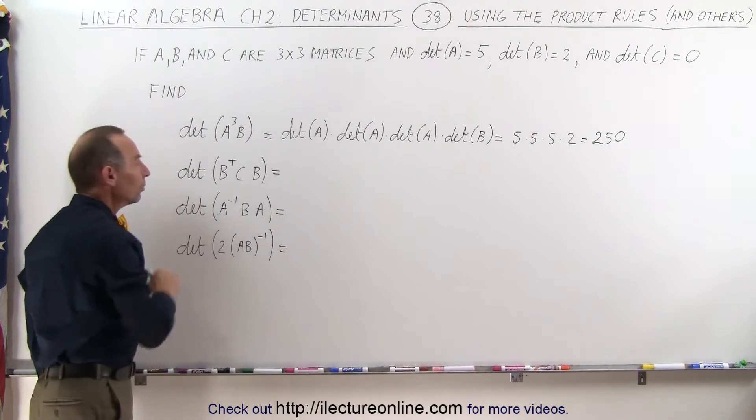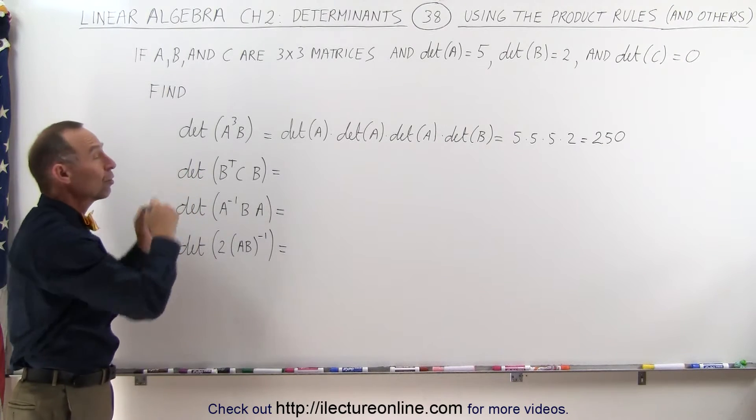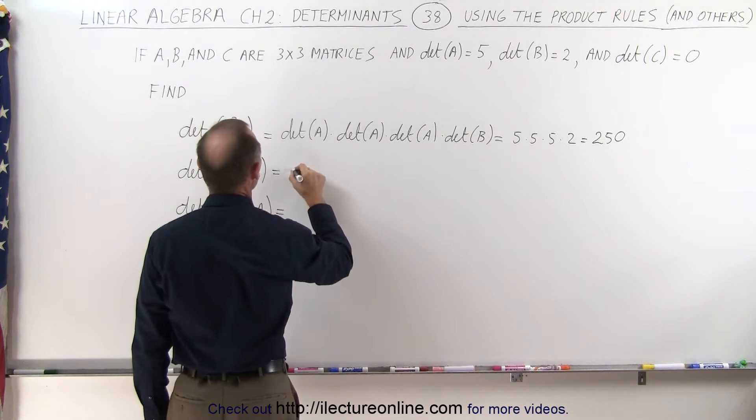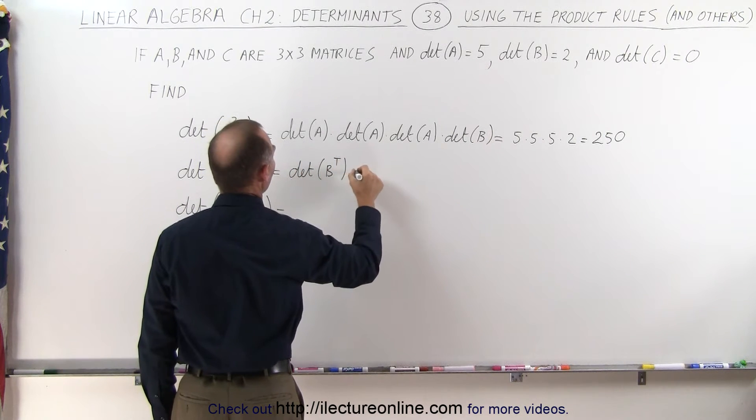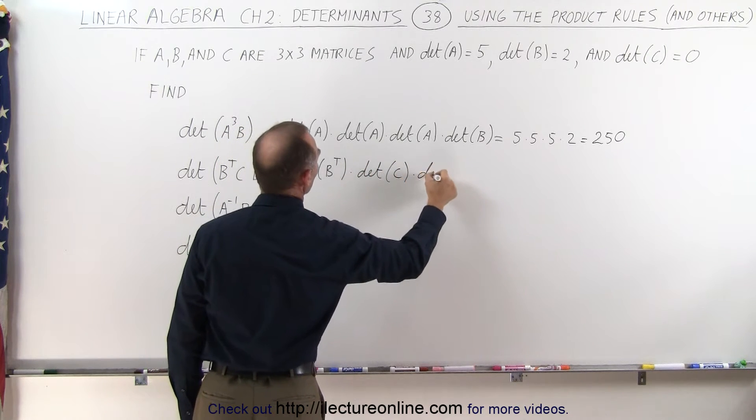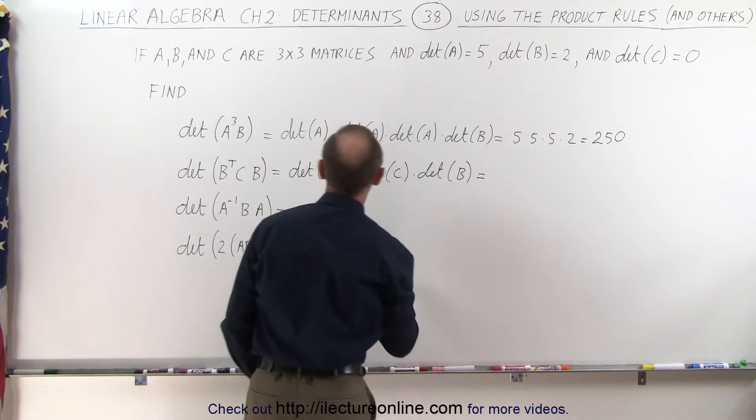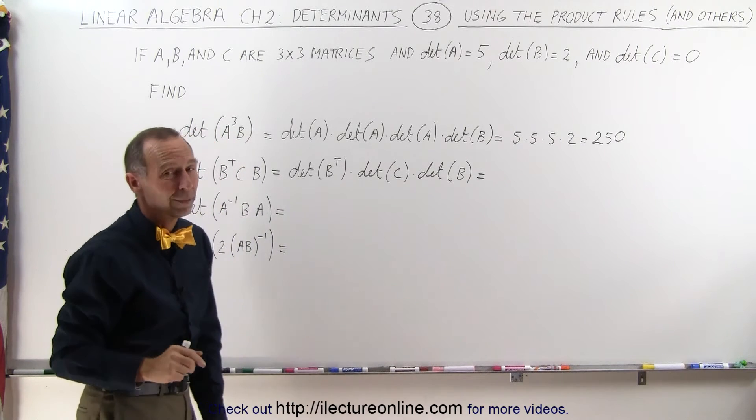Our next one we have B transpose times C times B, and we're trying to take the determinant of that. Again using the product rules, this is equal to the determinant of B transpose times the determinant of C times the determinant of B. Now even if you didn't know what to do with this one, since the determinant of C is equal to 0, the whole thing will go to 0.